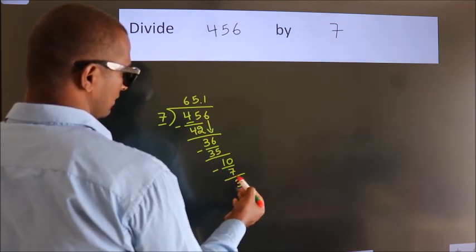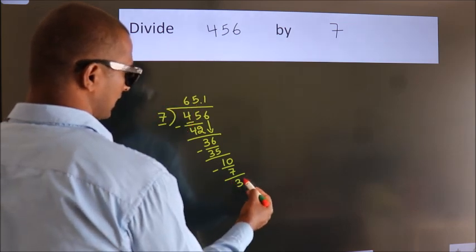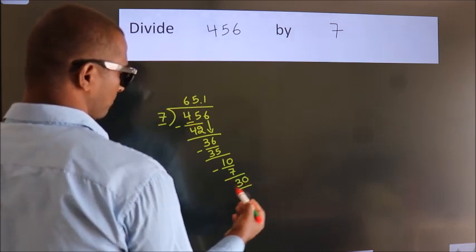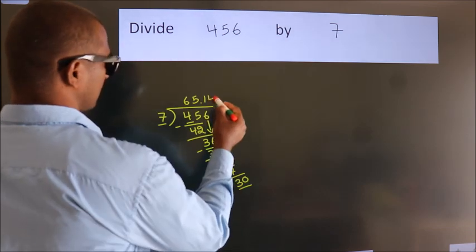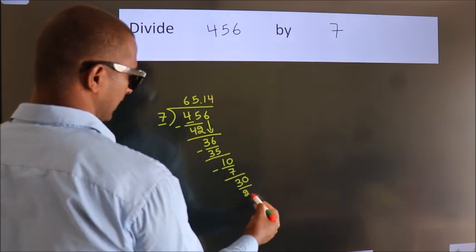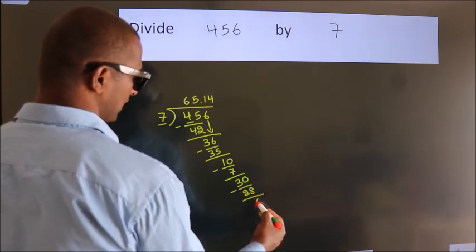After this we already have the decimal, so directly take 0. So 30. A number close to 30 in the 7 table is 7 times 4, which is 28. Now we subtract. We get 2.